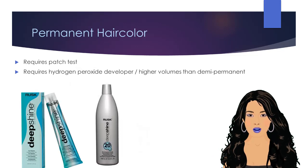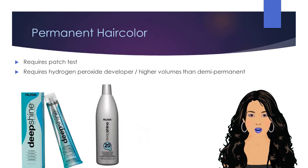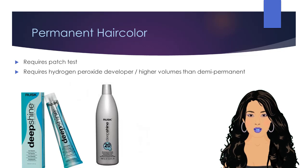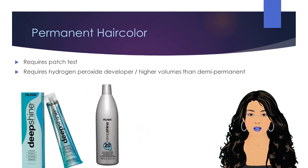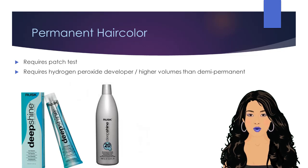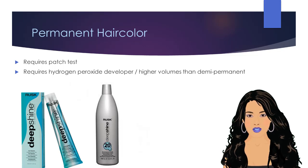Be sure to perform a patch test when using permanent hair color. Permanent colors are oxidative colors, meaning they require the use of an oxidizing agent, such as hydrogen peroxide.